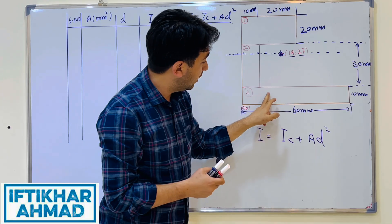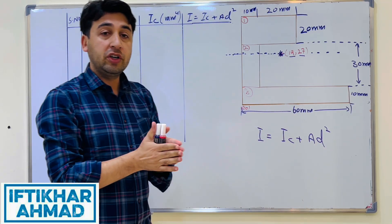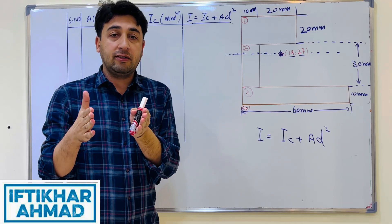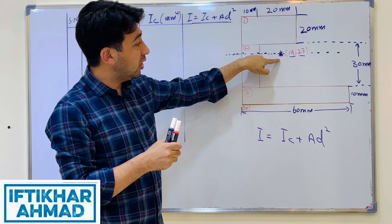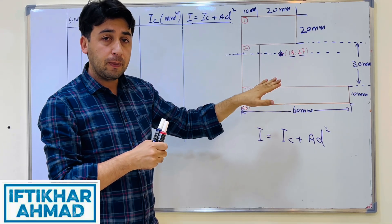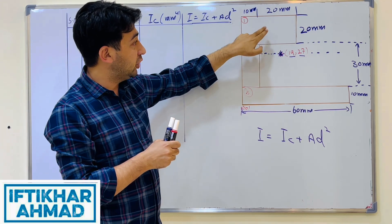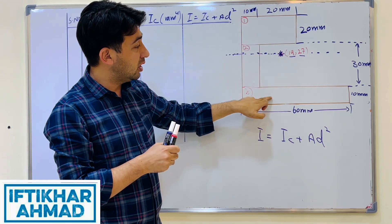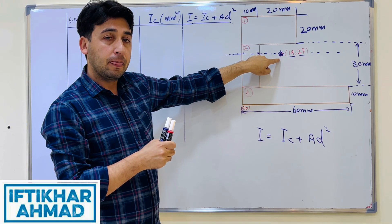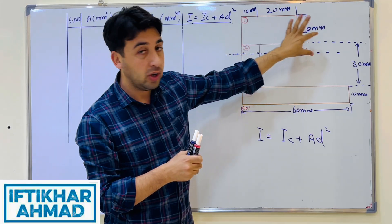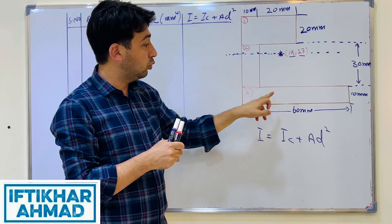D is the distance between two axes: the centroidal axis of the composite shape and the centroidal axis of each individual common geometrical shape. We have three shapes — 1, 2, and 3 — so we find the distance between the centroid of each sub-shape and the centroid of the composite shape. That distance is D, and we find D1, D2, and D3.